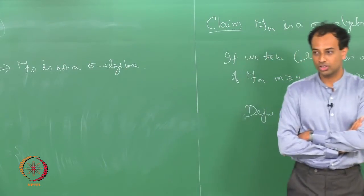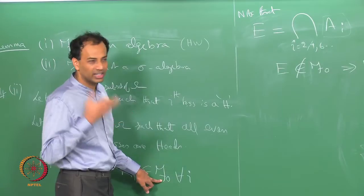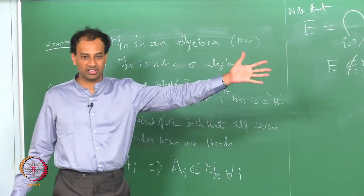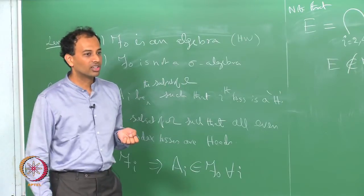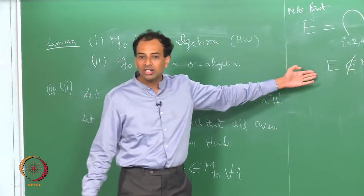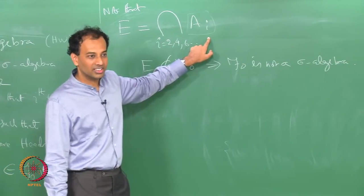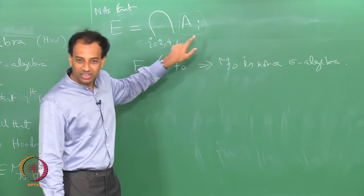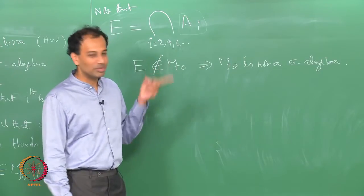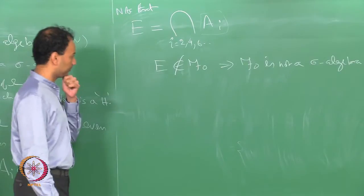Because F_0 only consists of subsets which are decidable in finitely many tosses, and we cannot decide E in finitely many tosses — but E is a countable intersection of elements of F_0. So A_i ∈ F_0 but E ∉ F_0, which proves F_0 is not a sigma algebra. This is yet another example of an algebra which is not a sigma algebra.